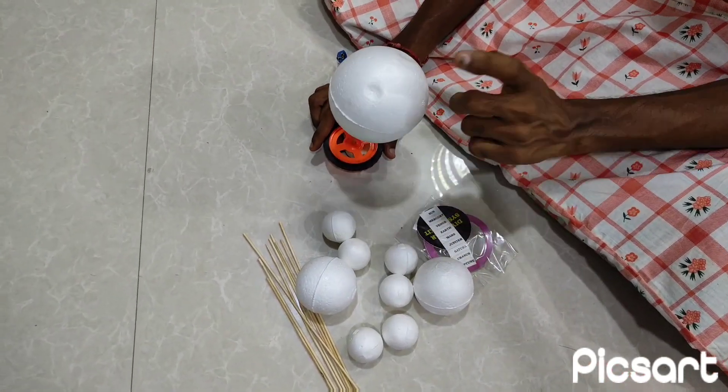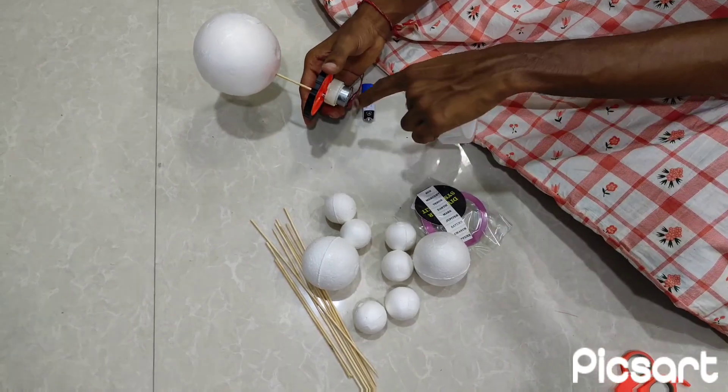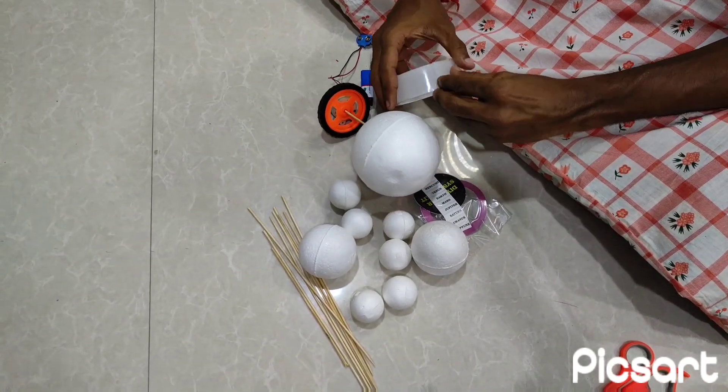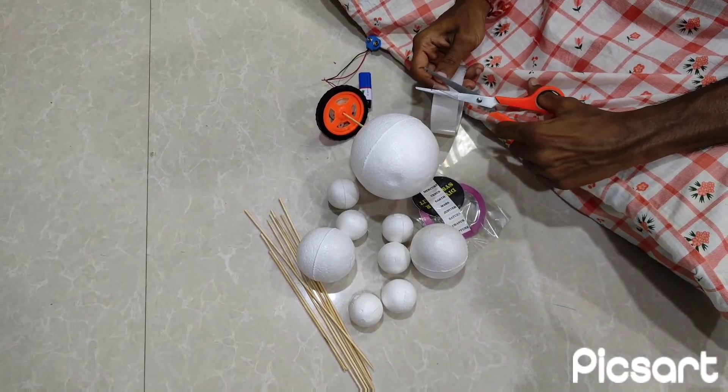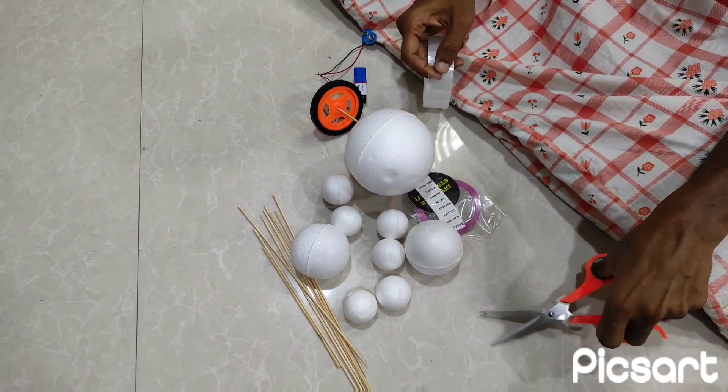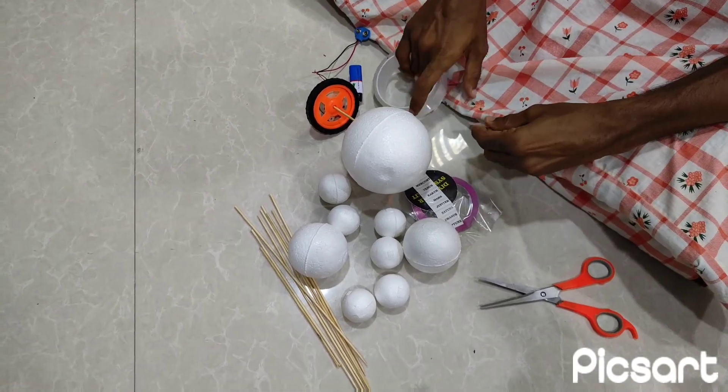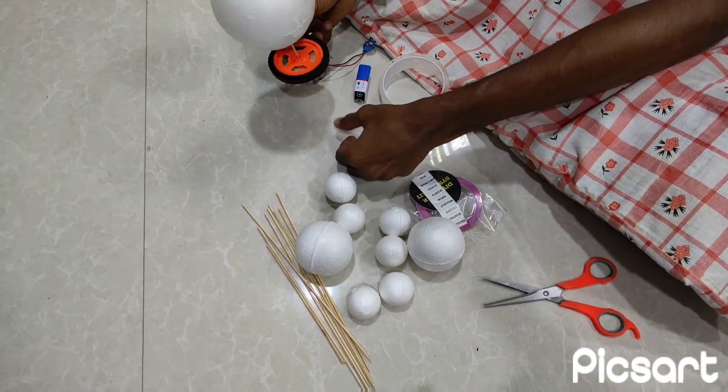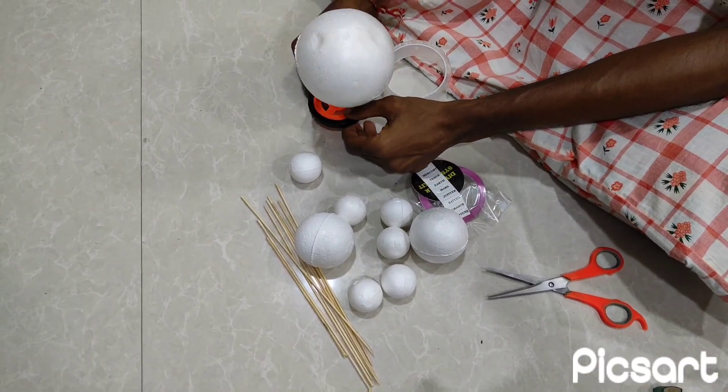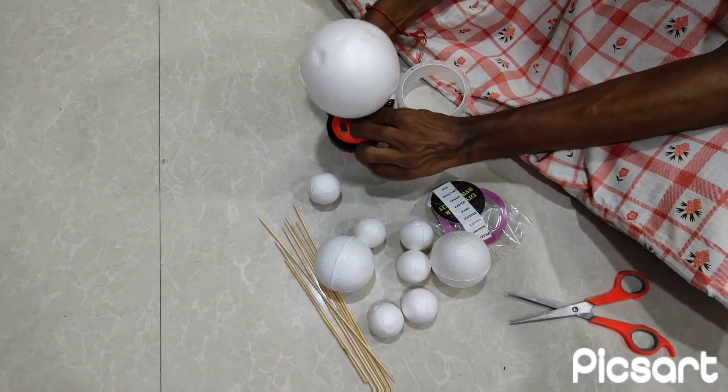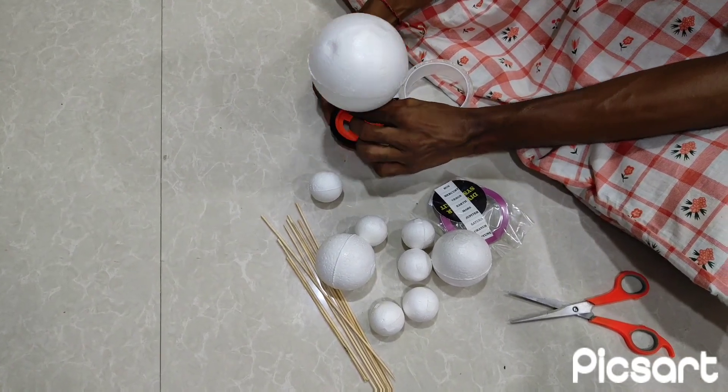First thing is, now use a double tape so this position will not change. I will cut a double tape, stick at the bottom, and stick on this. So it becomes fit. Now this will not fall down for sure.